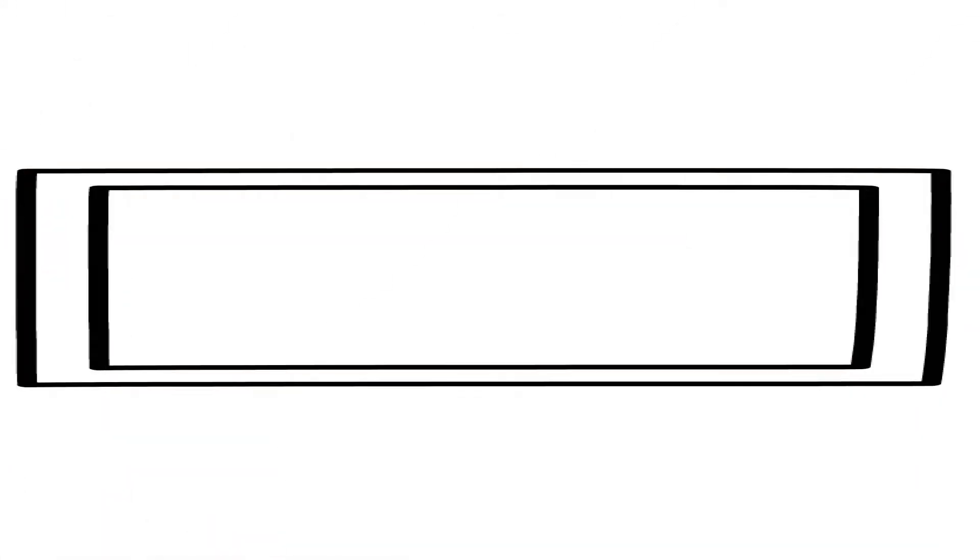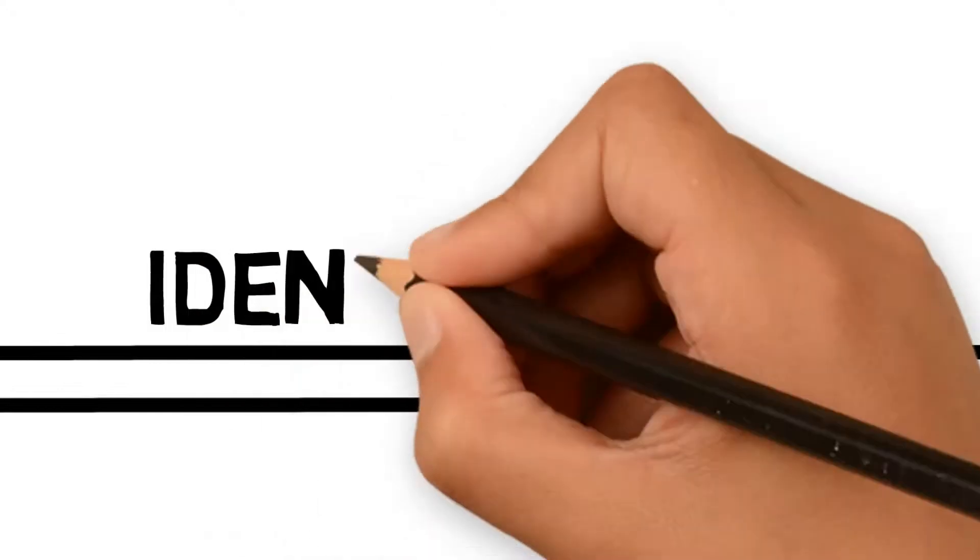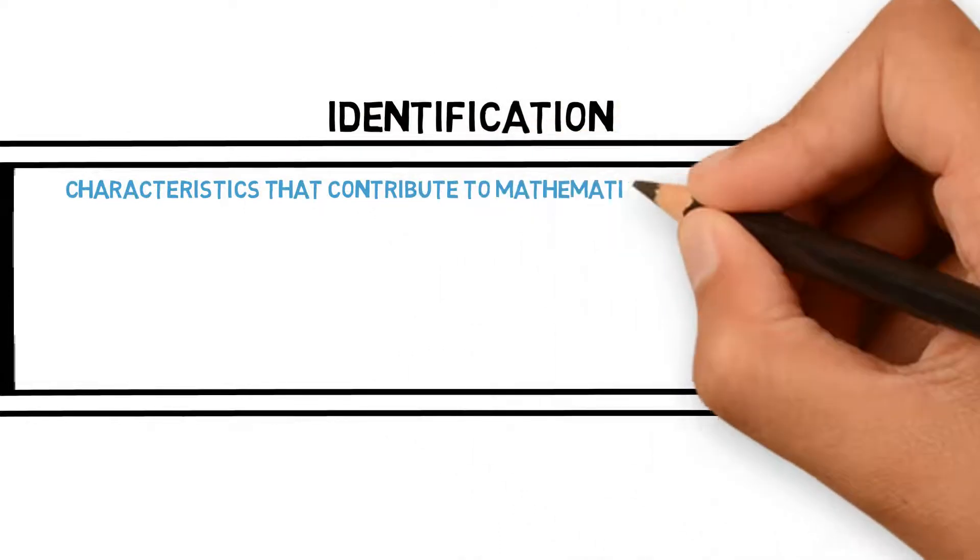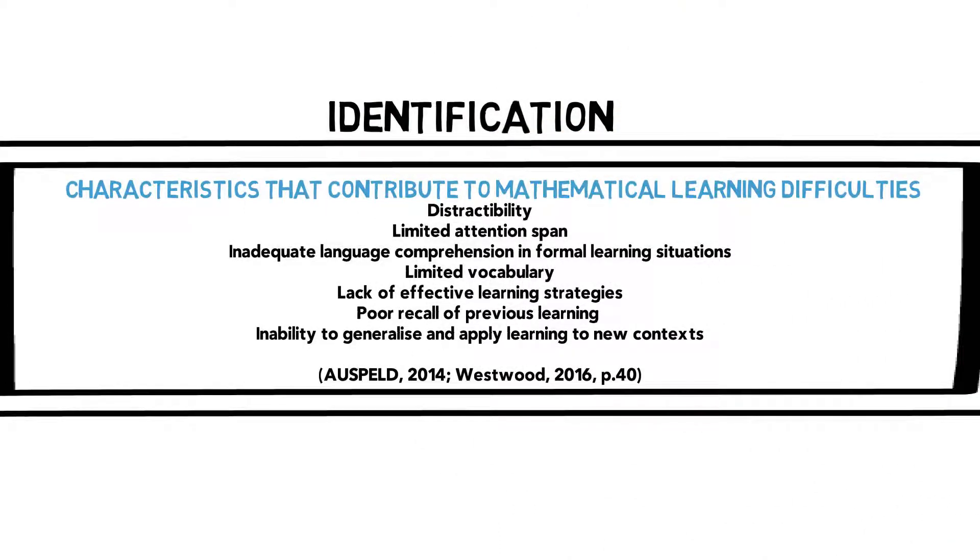So what can teachers do to ensure all students become successful learners? Before making any adjustments, teachers need to identify children experiencing mathematical learning difficulties. There are a range of characteristics and signs that indicate and contribute to learning difficulties in mathematics, such as distractibility, limited attention span, inadequate language comprehension and limited vocabulary.